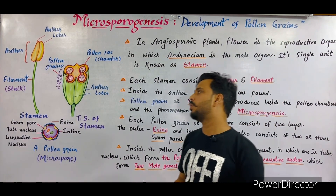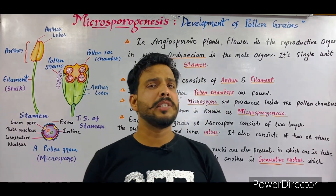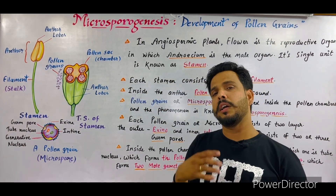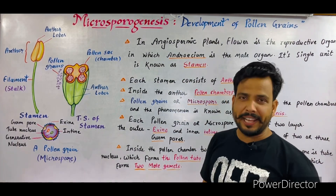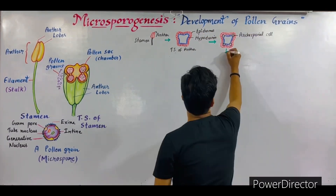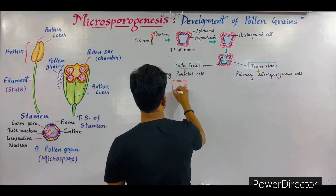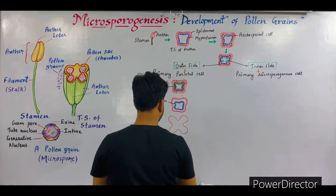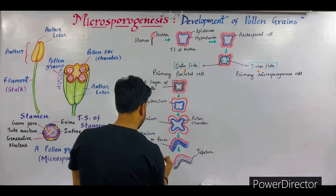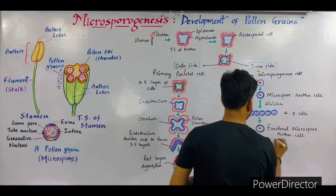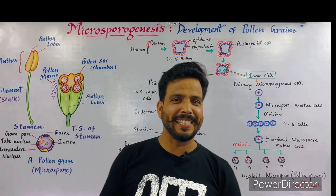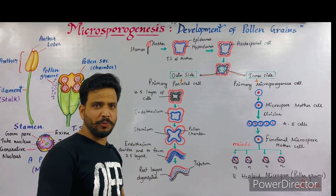Now we will discuss microsporogenesis — how the development of pollen grains takes place inside the flower. I am going to make a diagram to explain the process of microsporogenesis. The diagram is ready; it is a very detailed diagram.